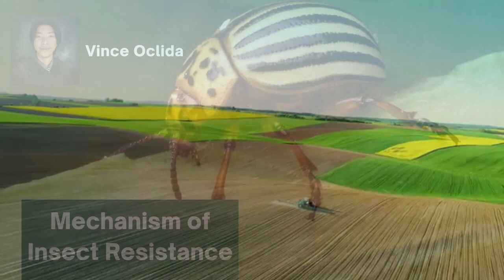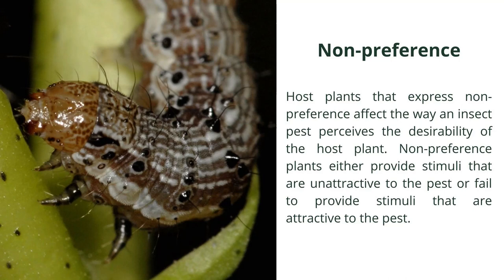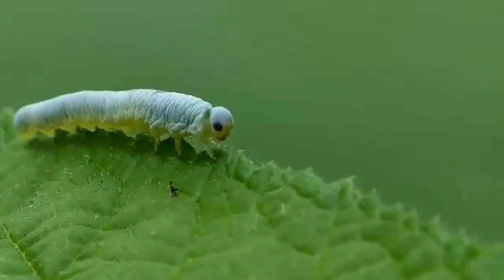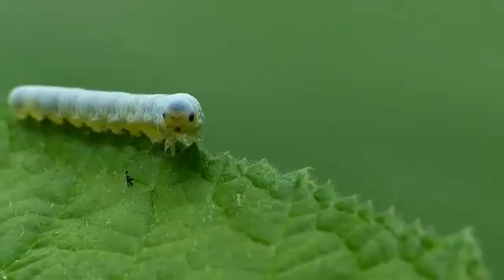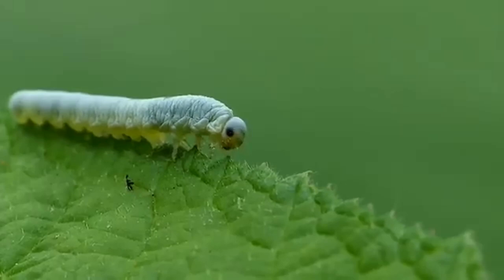Mechanism of insect resistance. Non-preference: host plants that express non-preference affect the way an insect pest perceives the desirability of the host plant. Non-preference plants either provide stimuli that are unattractive to the pest, or fail to provide stimuli that are attractive to the pest. Non-preference plants keep away insect pests from damaging them by providing stimuli that are unattractive to the pest.